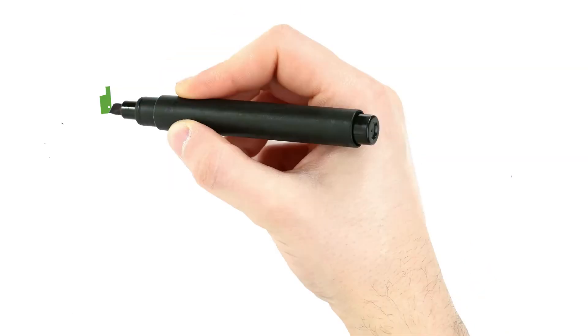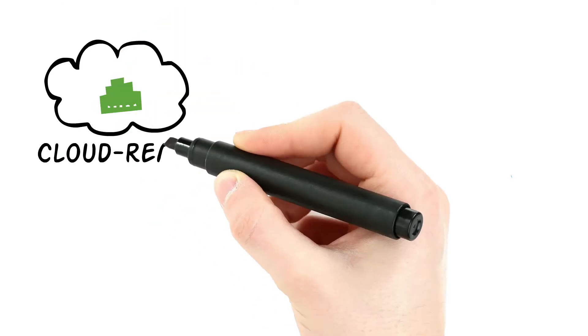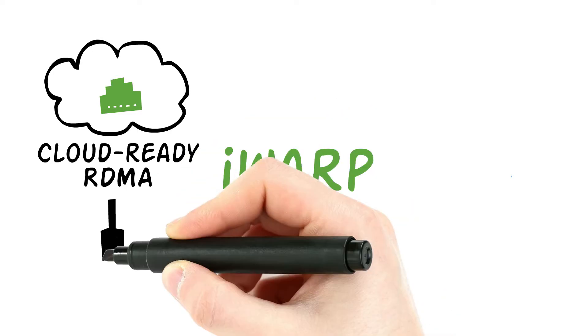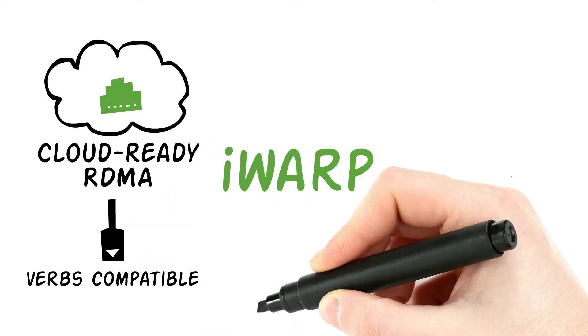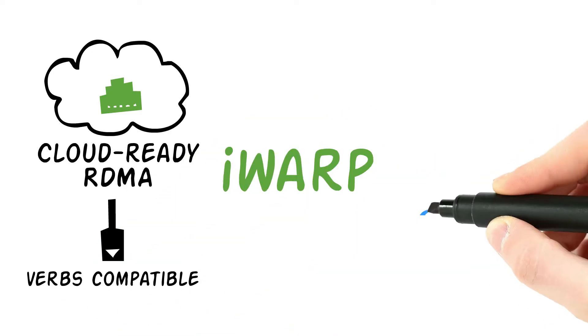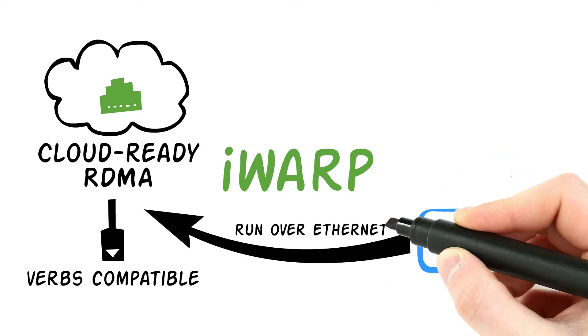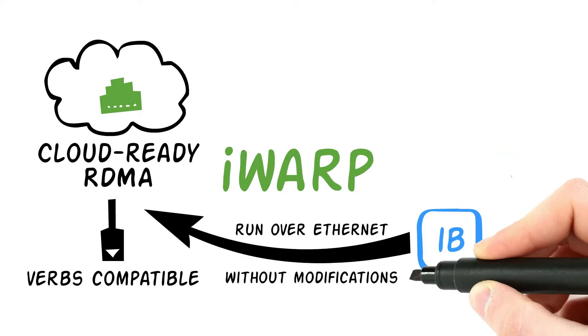iWarp offers an Ethernet-native, cloud-ready RDMA implementation that is VIRPS compatible with Infiniband, allowing IB applications to run over Ethernet without modifications.